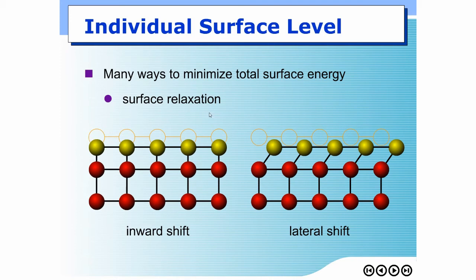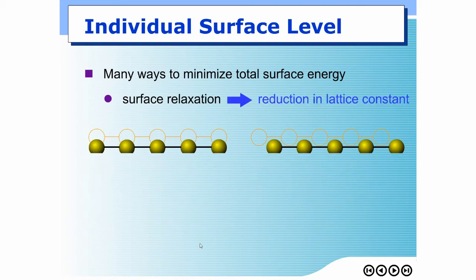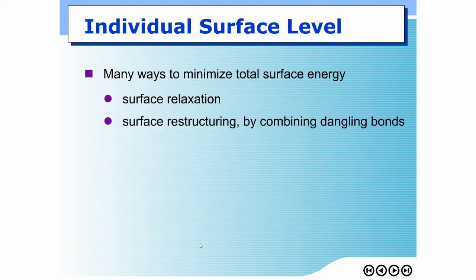One thing you will notice is that the lattice parameters of this lattice change. Originally the size of the lattice is A, but after surface relaxation it becomes smaller than A — it is no longer A. That is the main reason why lattice parameters of nanoparticles are usually different than those of the bulk. Surface relaxation is one cause that makes lattice parameters of nanoparticles usually smaller than those of the bulk.